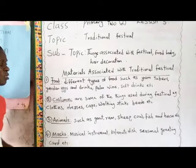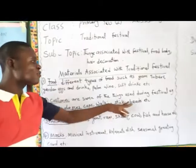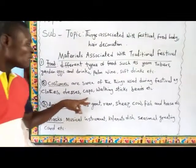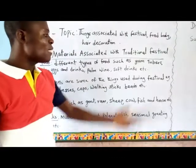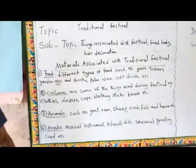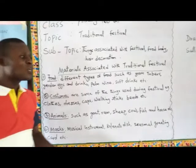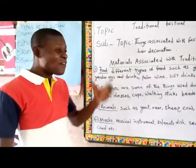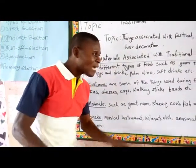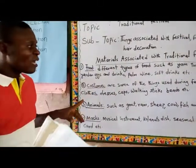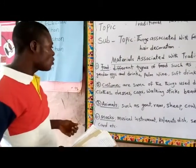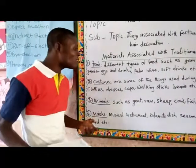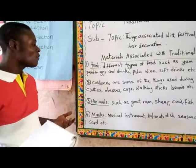Let's go to number two: costume. Costume — some of these things are used during festival aging. We have clothes, dresses, cap, walking stick, and beads. Those are things associated with festivals. Most of the time, people dress up with their fine cap and a beautiful walking stick to mark the traditional festival in their localities. You also put on special clothes that day during a festival.